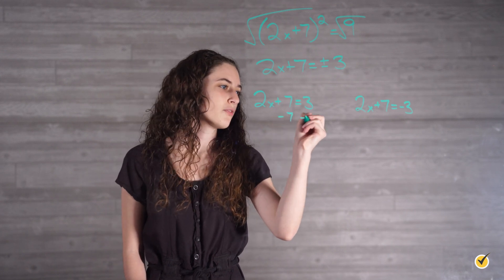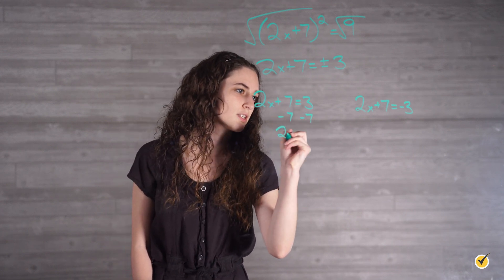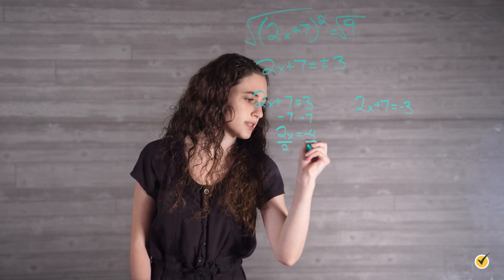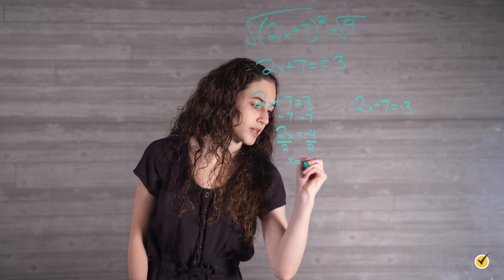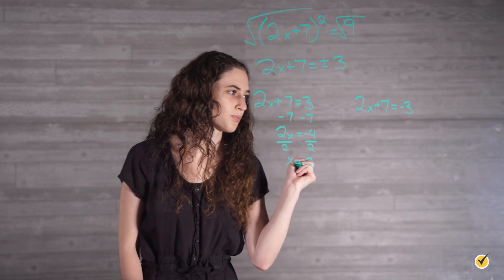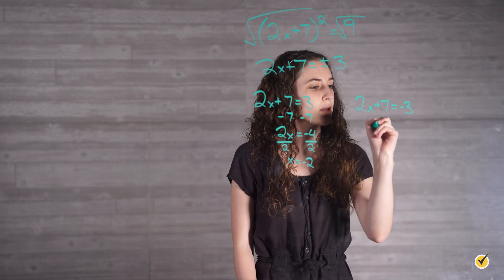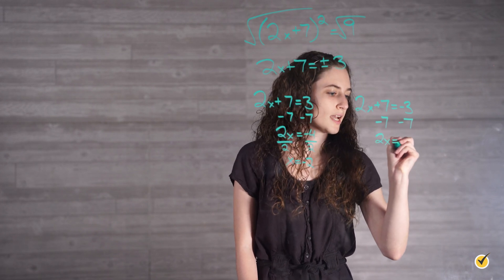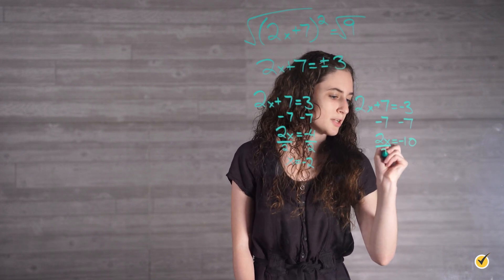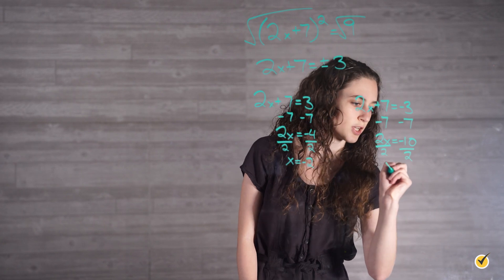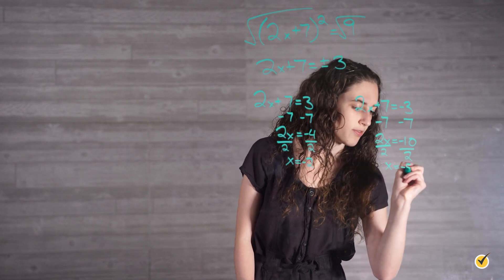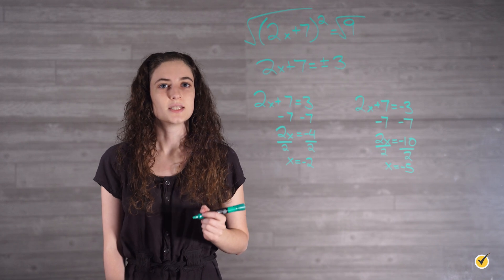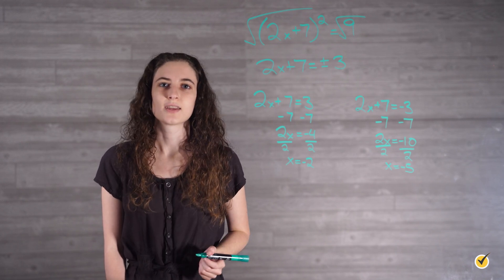So if we solve each of these individually, it will give us our two answers. First, we are going to subtract 7 from both sides, which gives us 2x is equal to negative 4. Divide by 2 on both sides, and we get x is equal to negative 2. For our other answer, we do the same thing: subtract 7 from both sides, which gives us 2x equals negative 10, then divide by 2 on both sides, giving us x is equal to negative 5. Our two answers are x equals negative 2 and x equals negative 5.